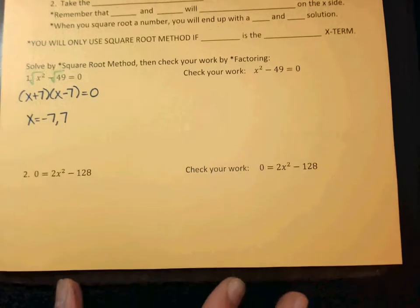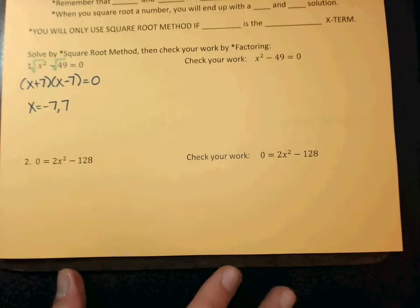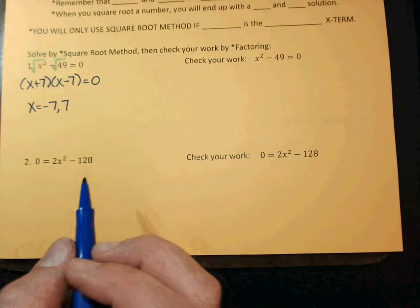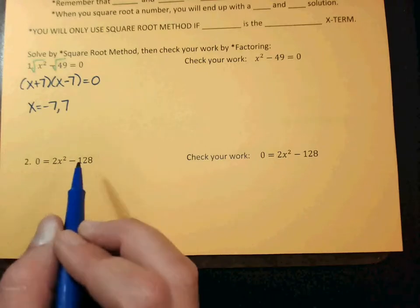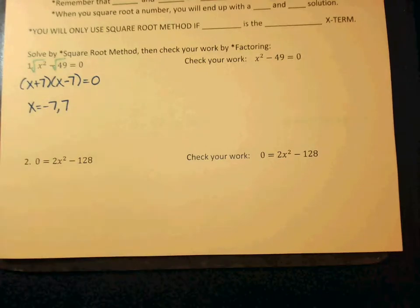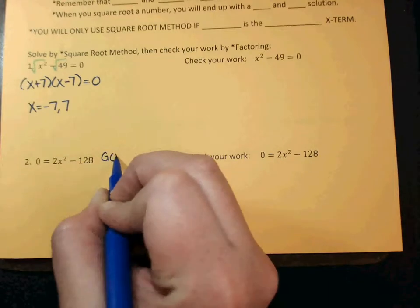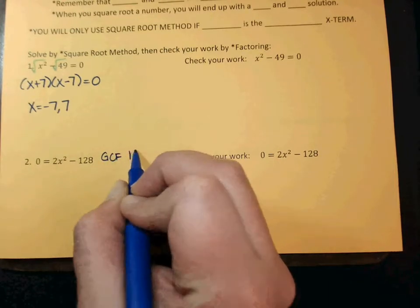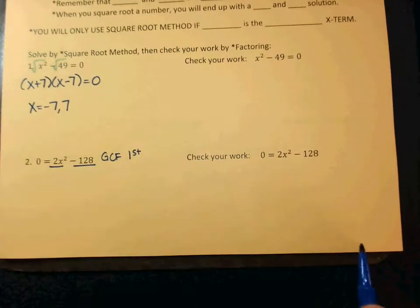Let's do one more like that. Look at number 2. Can I square root both of these right now? No, 2 doesn't have a perfect square. But remember, you should always check for a GCF first. So what can both of those divide by? 2.